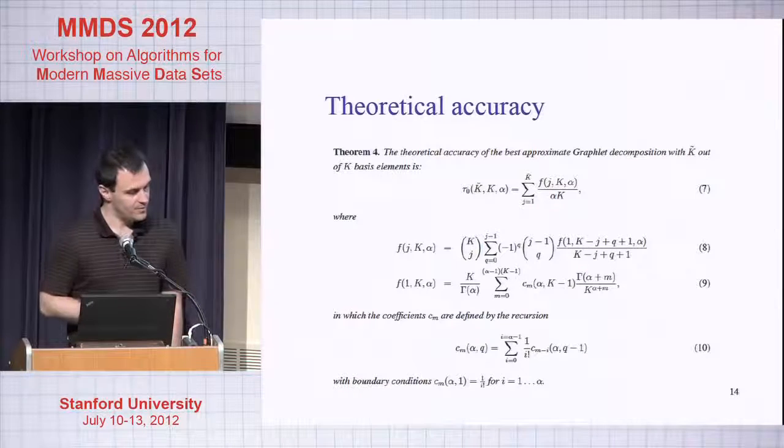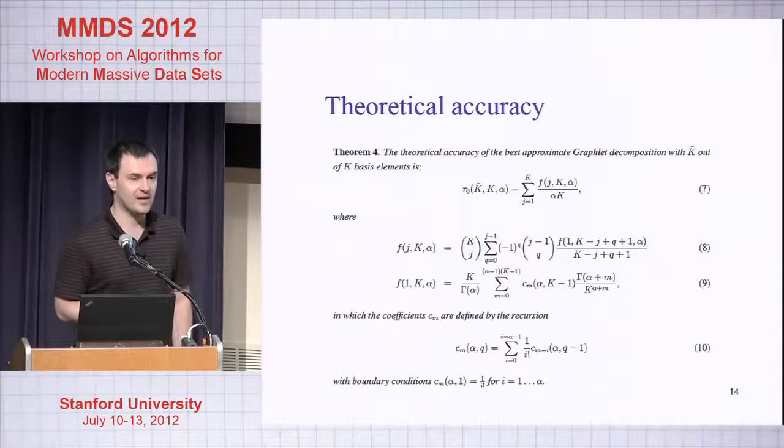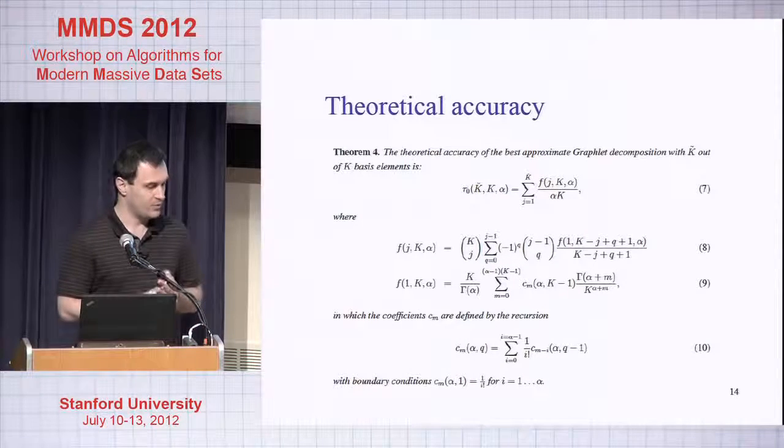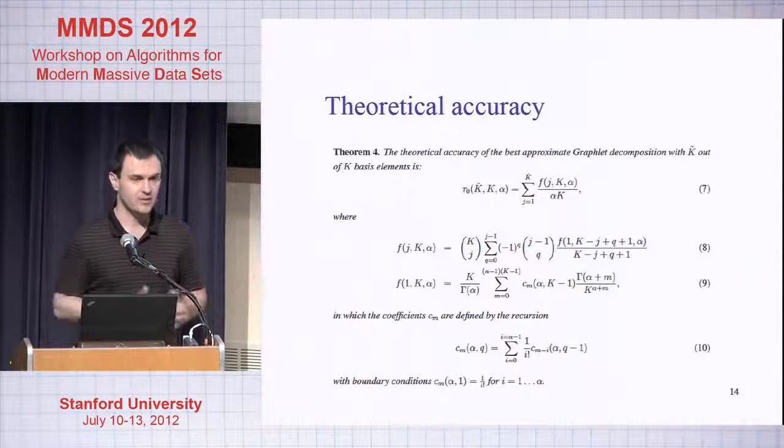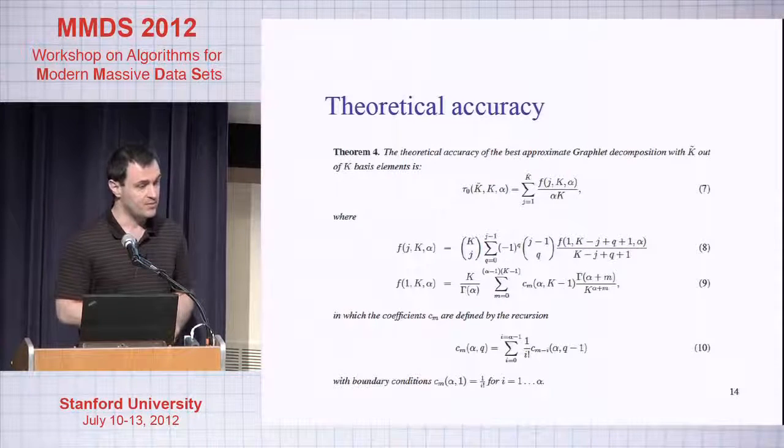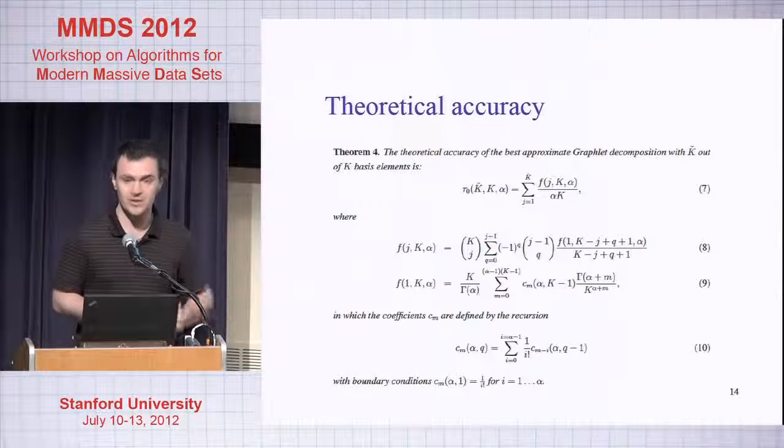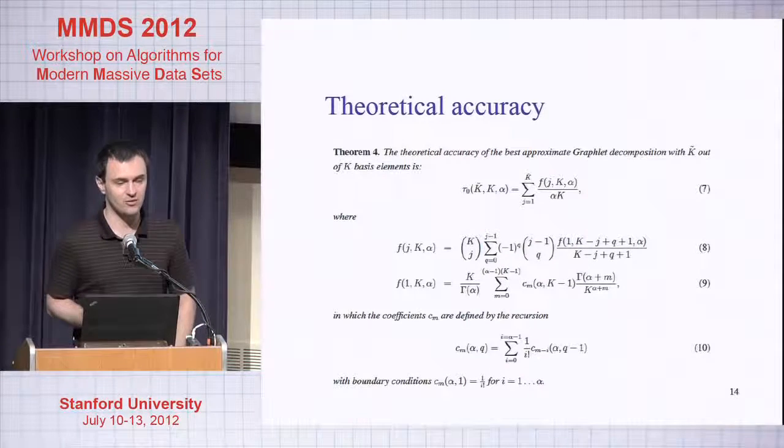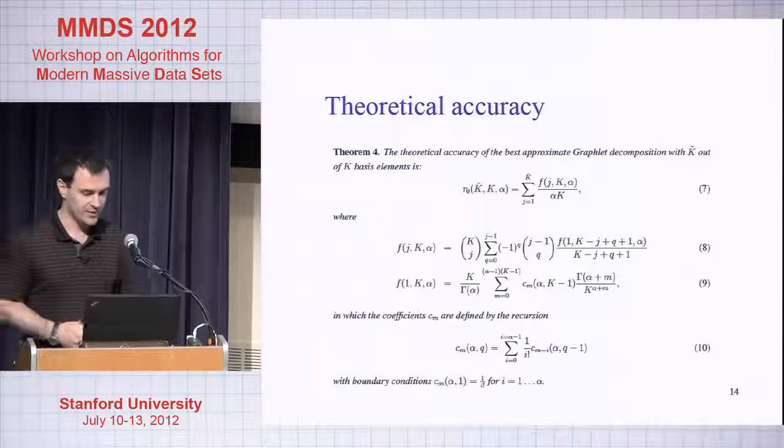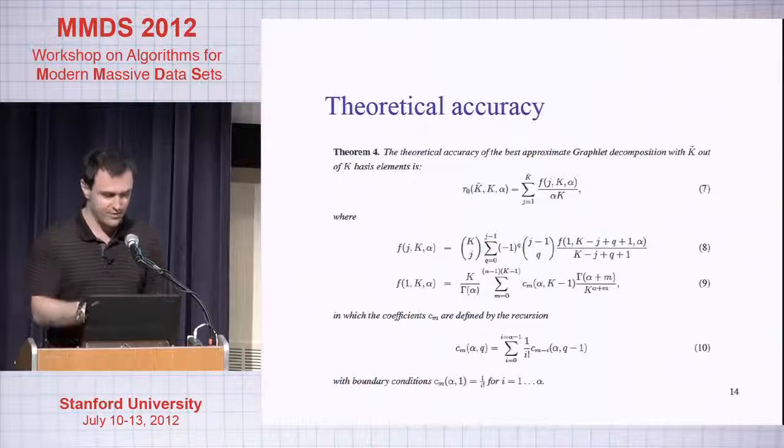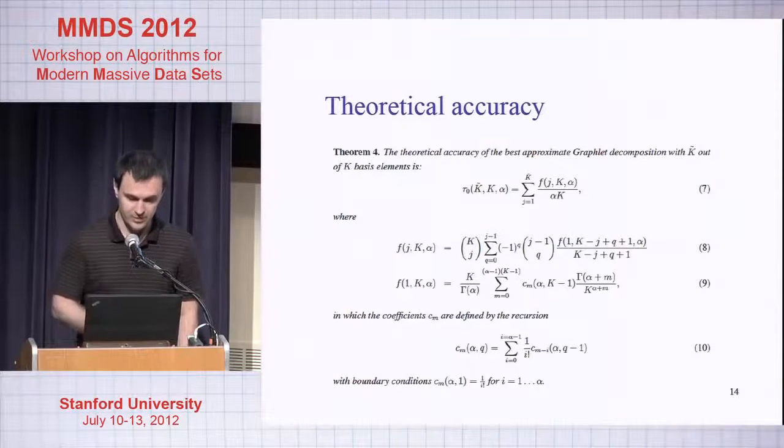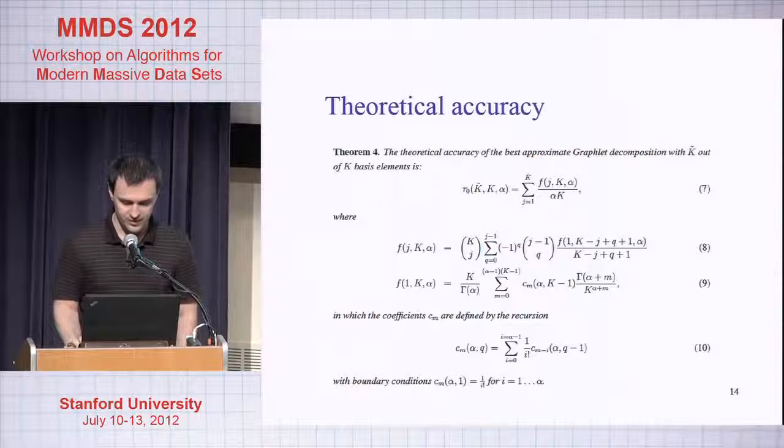You can also prove something about what's the expected accuracy if you want to do compression. Let's say that I know or I estimate that I need k basis to reconstruct exactly my weighted graph. Then I can ask, what if I use ten percent of these basis? What's the expected accuracy? The expected accuracy turns out to be a simple function of the sparsity of this binary factor matrix. This theorem just leverages some known results about order statistics of a gamma distribution. It's nothing really new, but the good thing is you can actually prove accuracy theoretically.